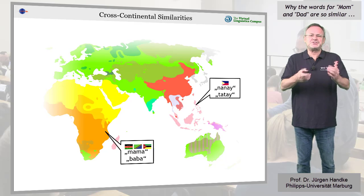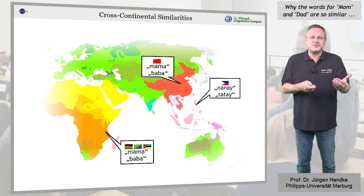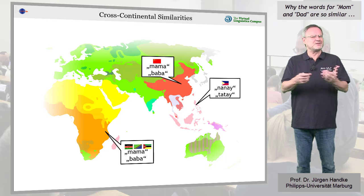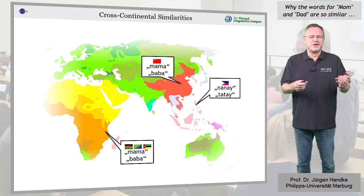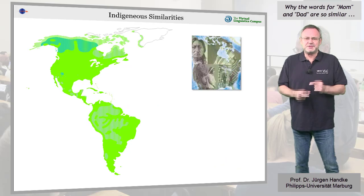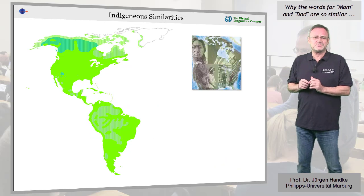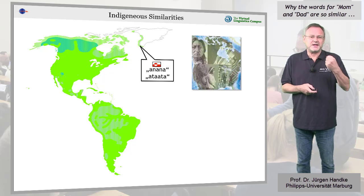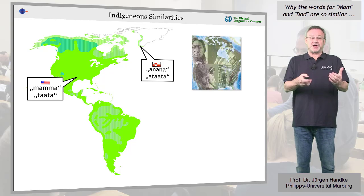Fijian has nana and tata. Mandarin, so intimidatingly different from English to the learner, offers mama and baba. And Chechen in the Caucasus? Well, nana and da. And even Native American languages—Eskimo, for example, has anana and atata.